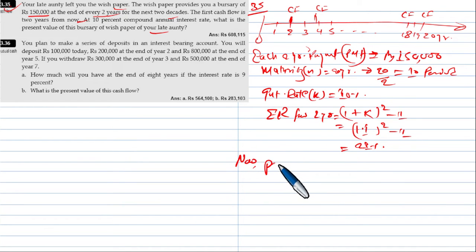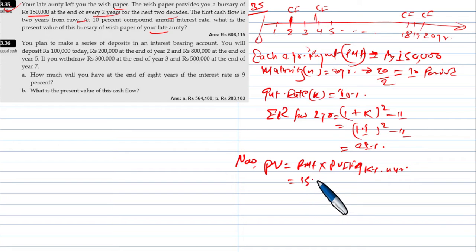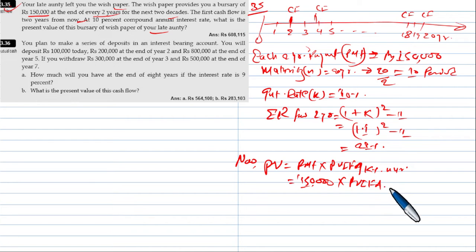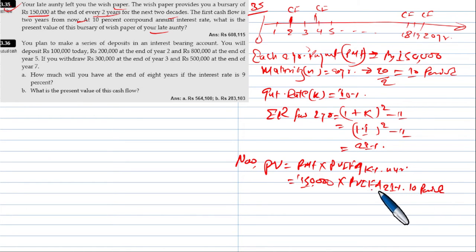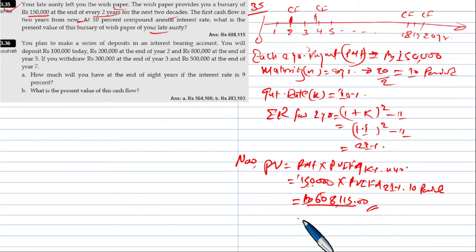Therefore, PV is equal to PMT multiplied by PVIFA. The PVIFA is at 21 percent annual rate for n periods, where PMT equals one lakh and the interest rate is 21% with the two-year period.